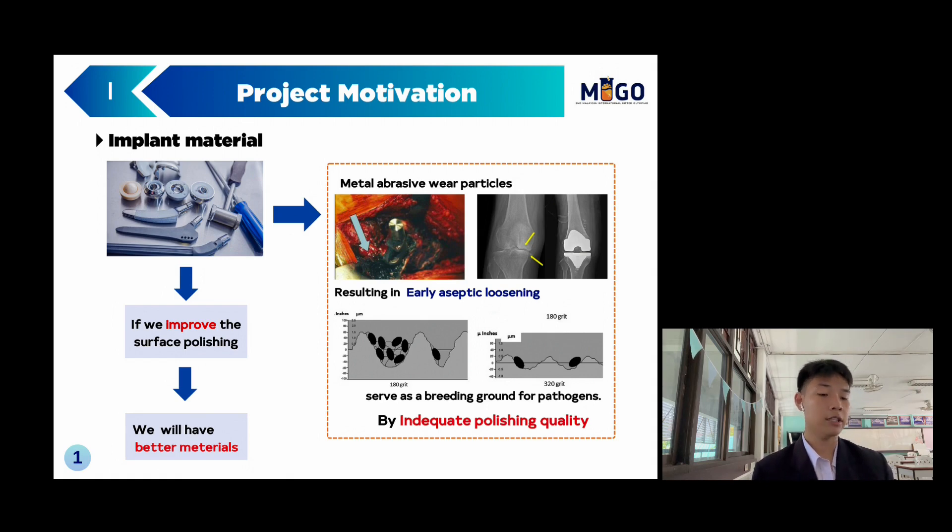Premature failure in turn leads to early excessive loosening, primarily resulting from the intricate surface smoothness that retains metal abrasive particles and may serve as a breeding ground for pathogens.